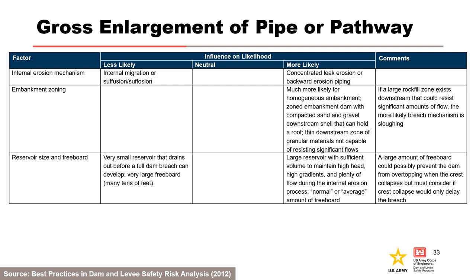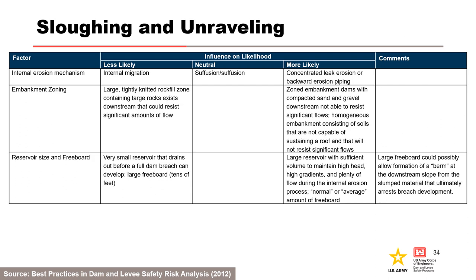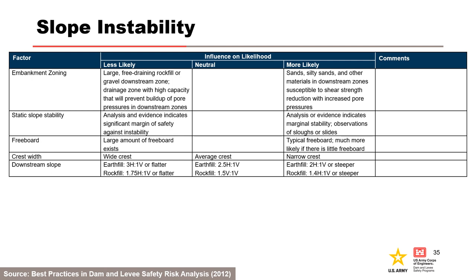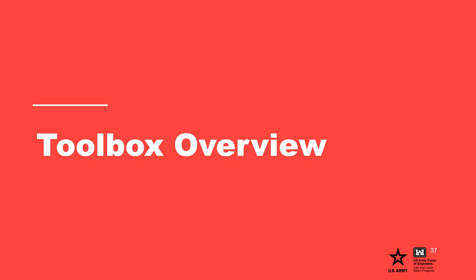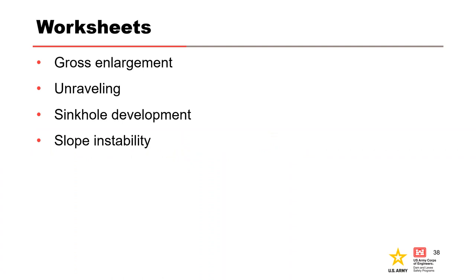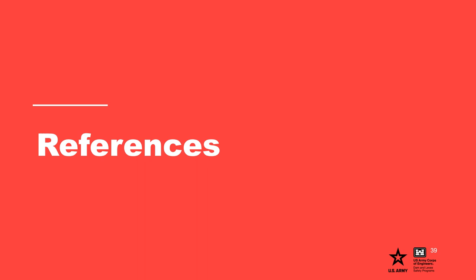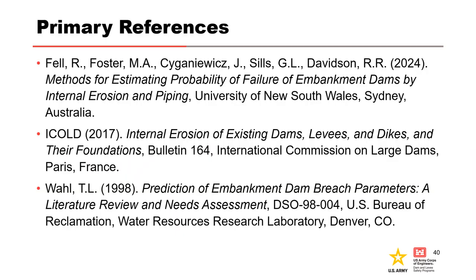The factors in this portion of the table address breach by gross enlargement of a pipe or erosion pathway. The factors in another portion address breach by sloughing and unraveling. Additional factors address breach by slope instability, and further factors address breach by sinkhole development. The breach toolbox includes worksheets for each of the different breach mechanisms. The primary references used to develop this presentation are also shown.